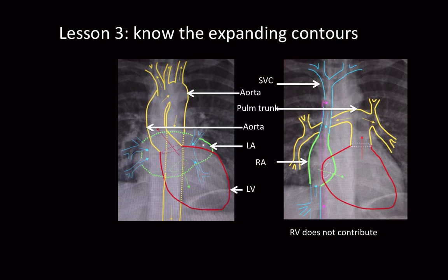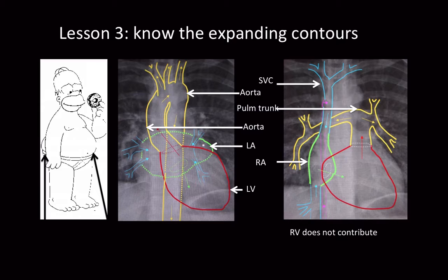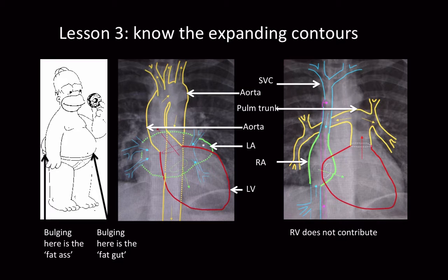If you look at the picture on the right, you'll see that the right cardiac margin does not contribute to the outline of the heart. I tell people that if you know which organ or part of an organ is situated in a particular position, you can never make a mistake. I'll show you a picture of Homer Simpson — Bart's father. If we noted a bulging in the anterior part of Homer's silhouette, we'd know it's his abdomen. A bulging on the back would be his bum getting bigger as he eats the donuts. The same applies to the cardiac margin: if the left cardiac margin bulges, that's probably the left ventricle enlarging.